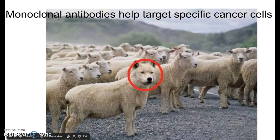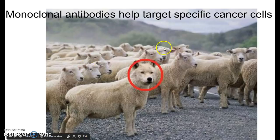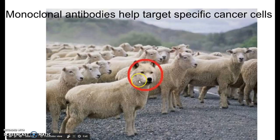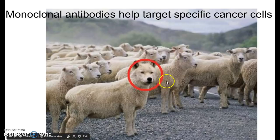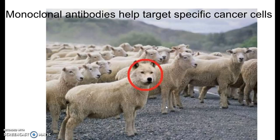Now here's my slide on monoclonal antibodies. Monoclonal antibodies are used to treat cancer because they help the body target specific cancer cells. In this photo, you have a flock of sheep representing your good healthy cells, and then a wolf in sheep's clothing representing the cancer cell. The problem with traditional chemotherapy is that it kills everything — wolf and sheep alike — and that's why people get so sick from it. The monoclonal antibody helps target just the cancer cells, like drawing a red circle around the wolf to make it easier for the medicine to spot it.